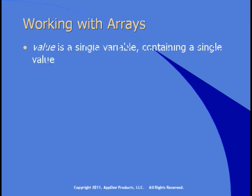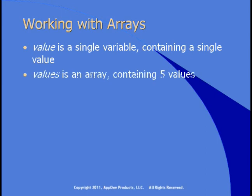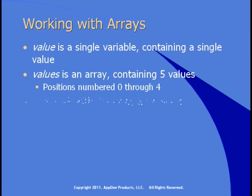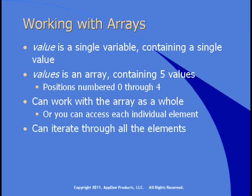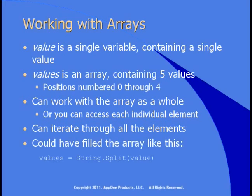In that diagram, value is a single variable containing a single value. Values is an array containing five values with positions numbered zero through four. You can work with the array as a whole, or you can access each individual element and iterate through all the elements. You could have filled the array by calling string.split — a method that takes in a string and, unless you specify otherwise, uses spaces as a delimiter to split the various words out and return back an array.